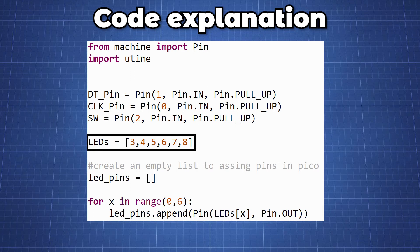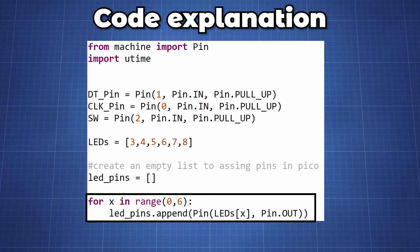We then create a list of our LEDs and the pins we will use. We create an empty list where we will initialize our pins as output and append it to the list. In this for loop we assign six LEDs to be pin out, appending it to the list LED pins.